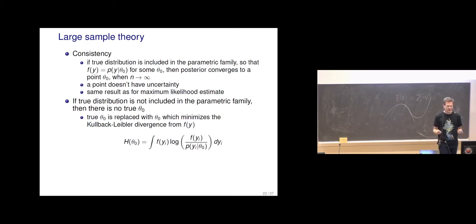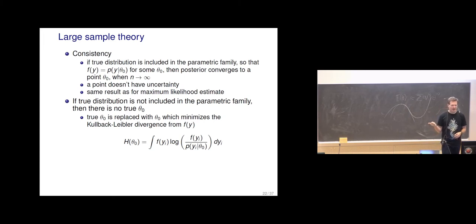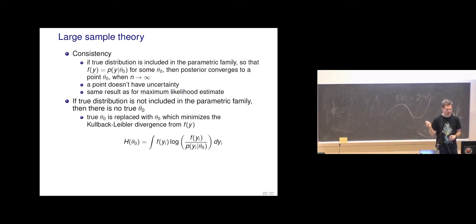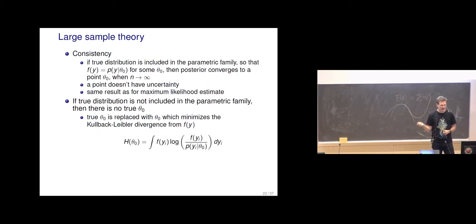We don't usually have a parametric family complex enough to really describe humans and society. If the true distribution is not included in the parametric family, there's no true theta-0, but then theta-0 is replaced with the value that minimizes the Kullback-Leibler divergence from the true distribution. That's also a nice property.